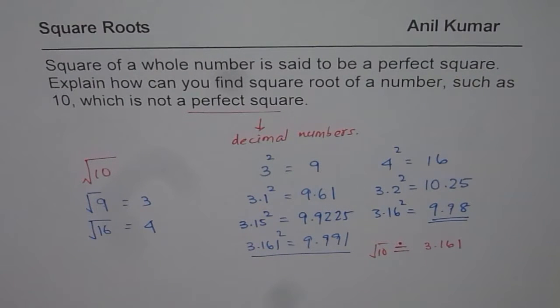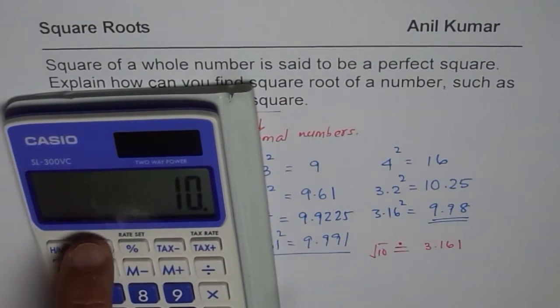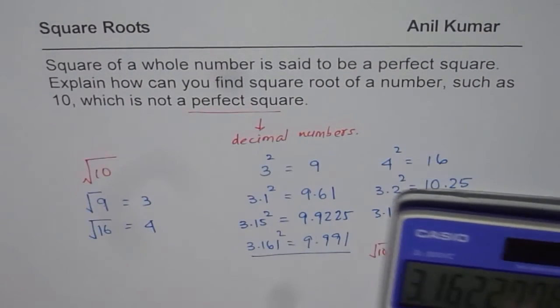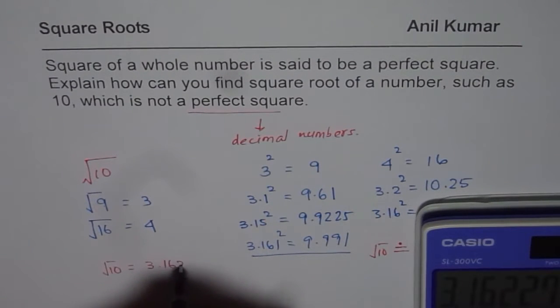Of course, in such a calculator, you could find very close value straight away. 10 square root is 3.1622. So, you know, square root of 10 could be found as equals to 3.1622.